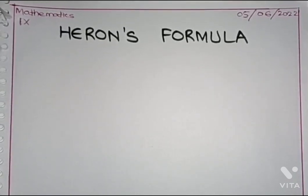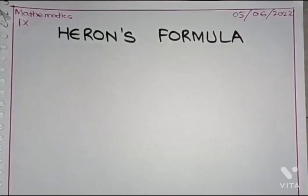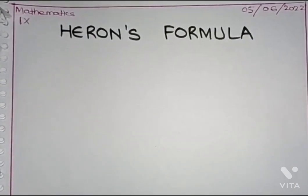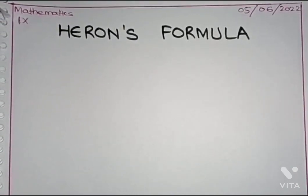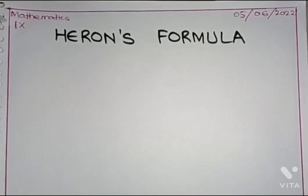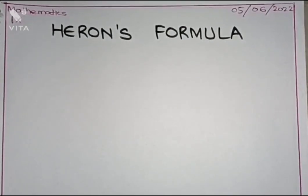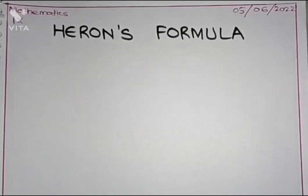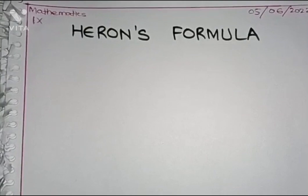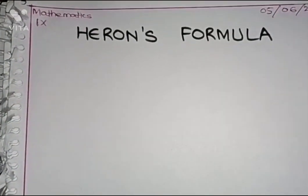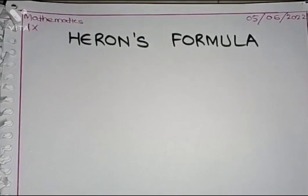Assalamualaikum students, hope you all are good. As we have studied earlier about the triangle and the formula to find the area of a triangle when height and base are given, today we are going to discuss a new formula to find the area of a triangle — Heron's formula. It was given by an Egyptian mathematician named Heron, who based it on the idea that if the three sides of any triangle are given, we are able to find its area.